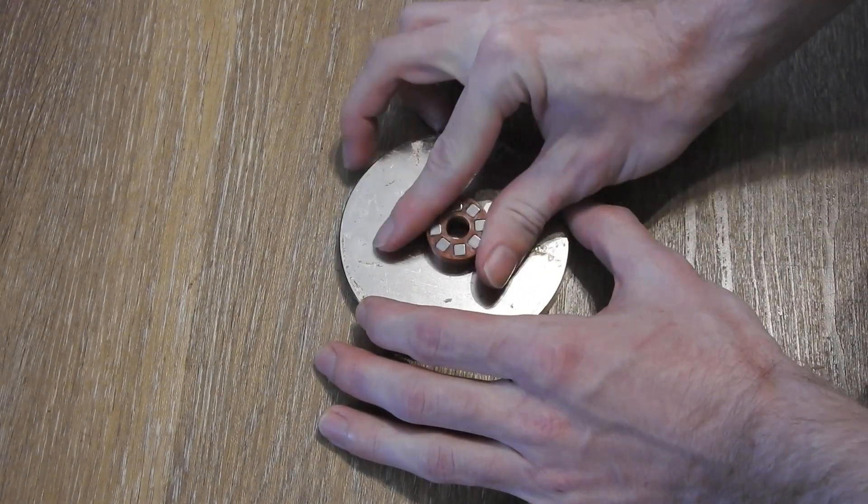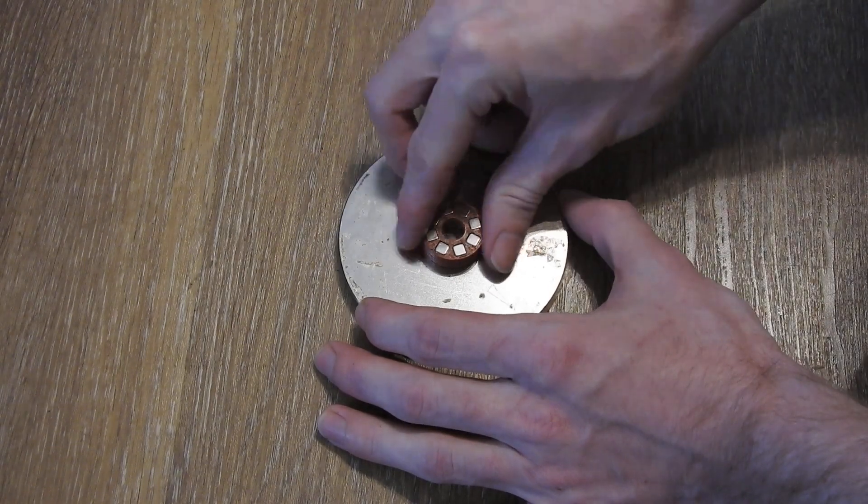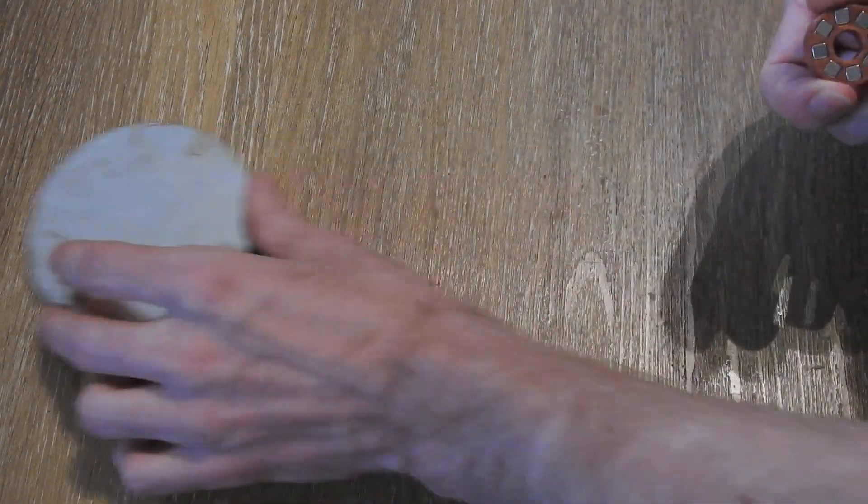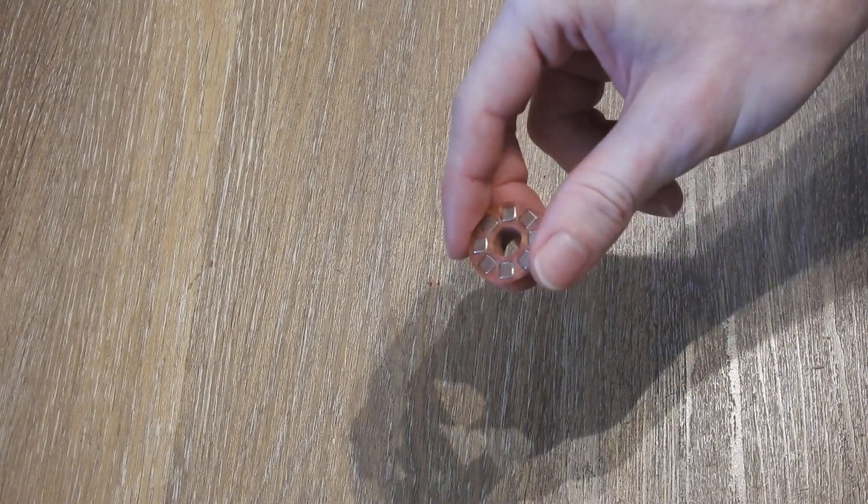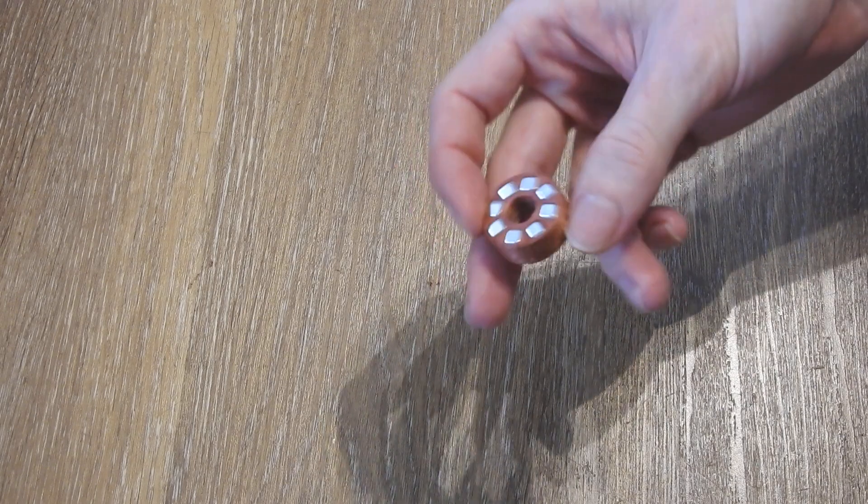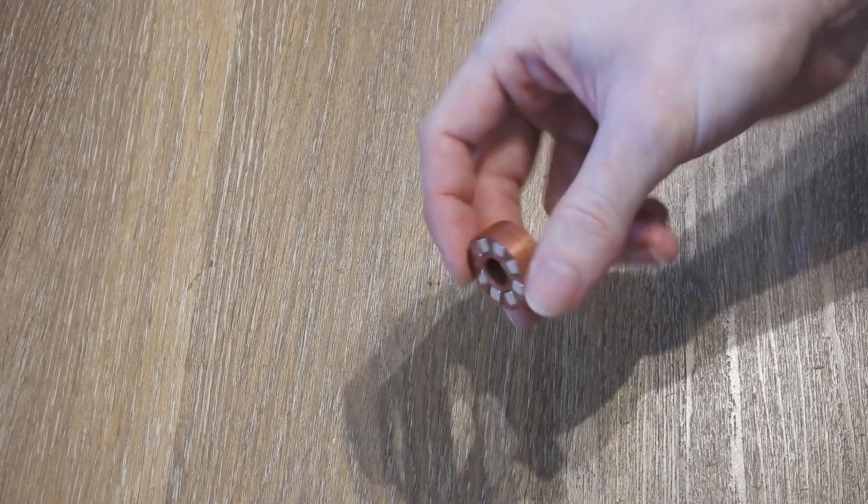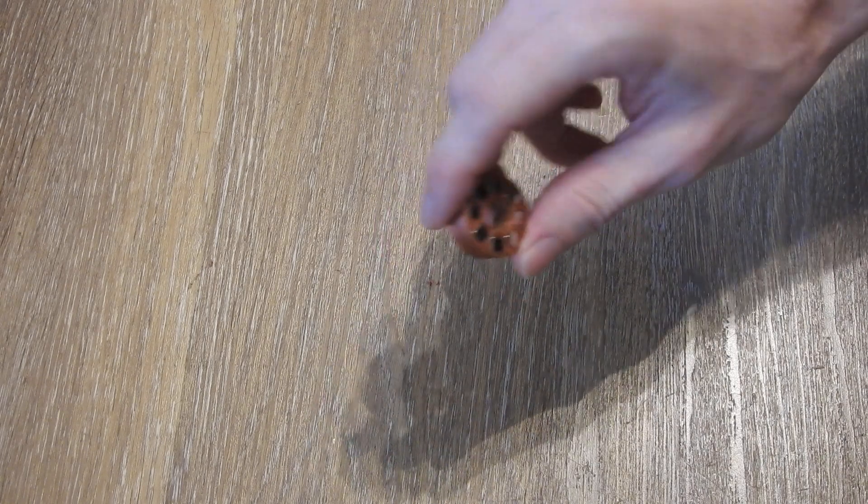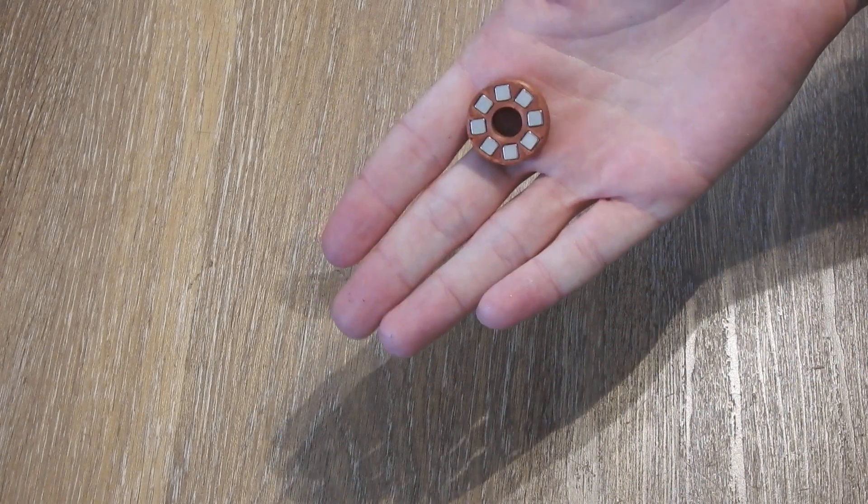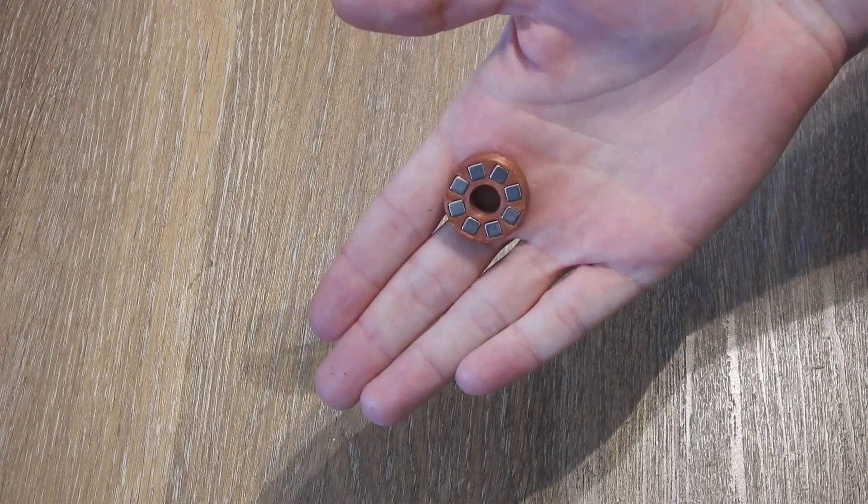Like here, like this. This is why I think this kind of magnet array has really interesting properties that I haven't seen with other Halbach configuration or other magnet arrays. So that's it for this video. Thanks for watching and goodbye.